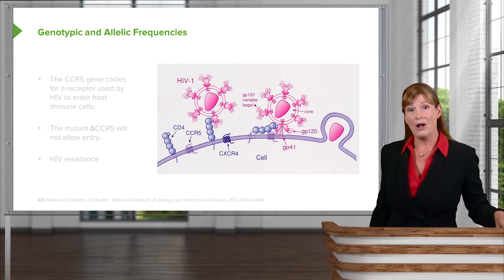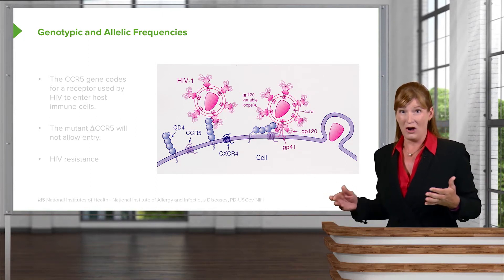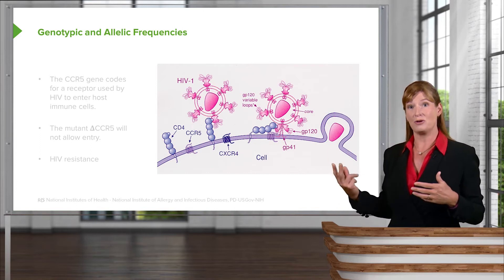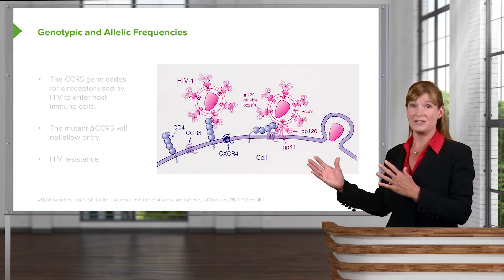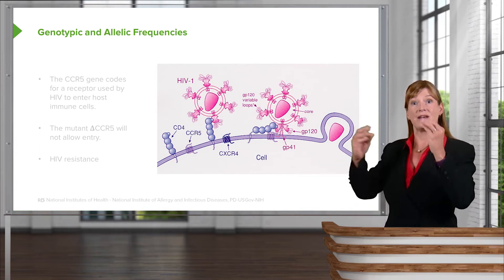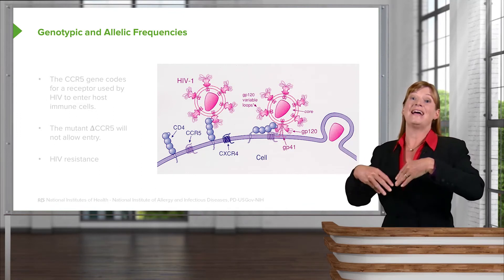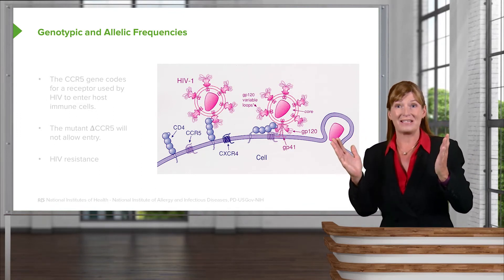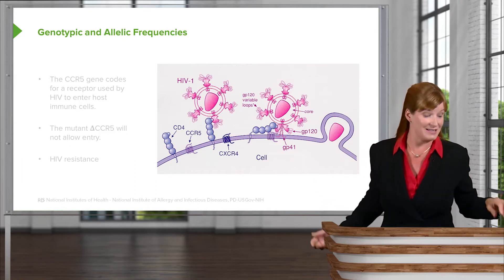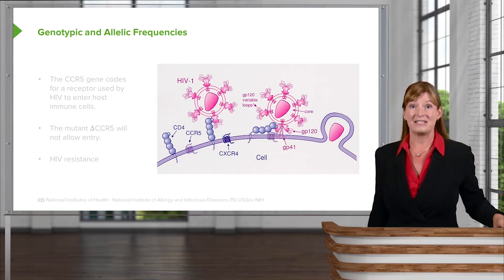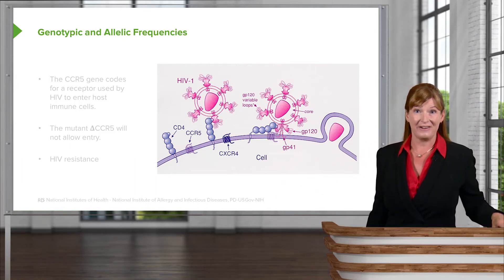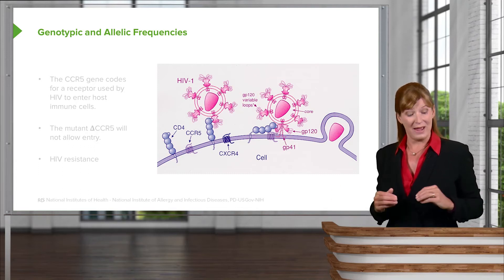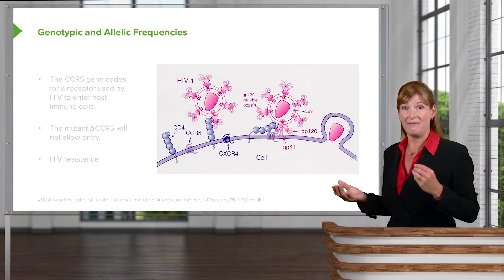You would probably recall that HIV requires two proteins in order to dock onto a cell. It connects to one and then the other, and then the cell it's going to infect lets it in. Of course the cell doesn't intend to — but that's the trick that HIV uses to gain entry.